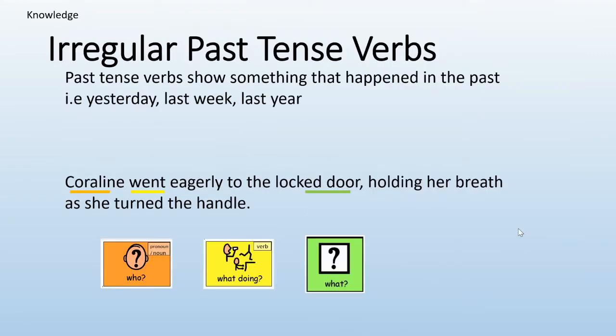Irregular past tense verbs still show something that happened in the past, like yesterday, last week, or last year. For example: Coraline went eagerly to the locked door holding her breath as she turned the handle. So the verb is go, but in the past tense it becomes went — it completely changes.